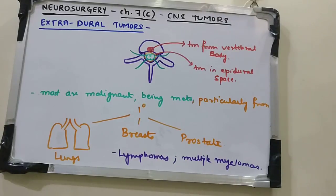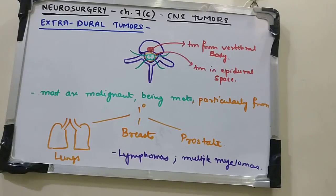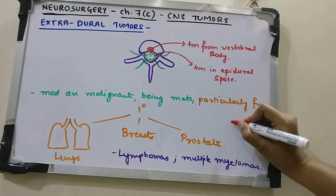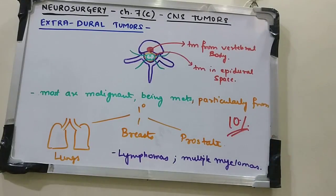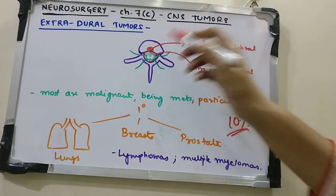Spinal epidural metastasis occurs in up to 10% of cancer patients. Other common extradural tumors include lymphomas and multiple myelomas.